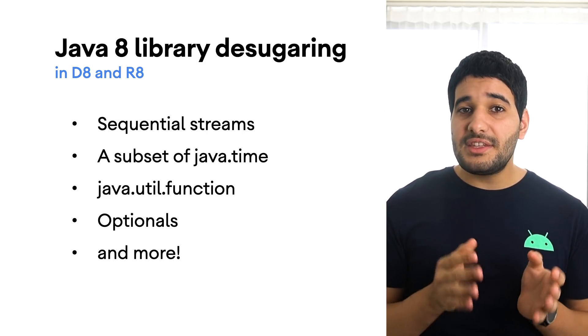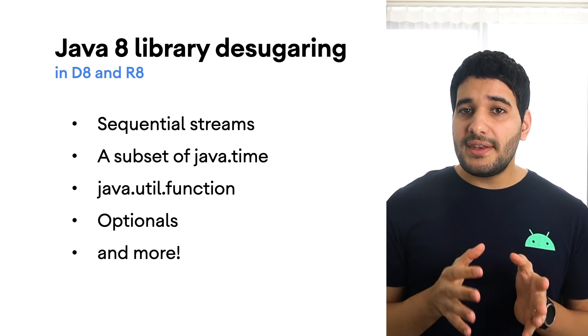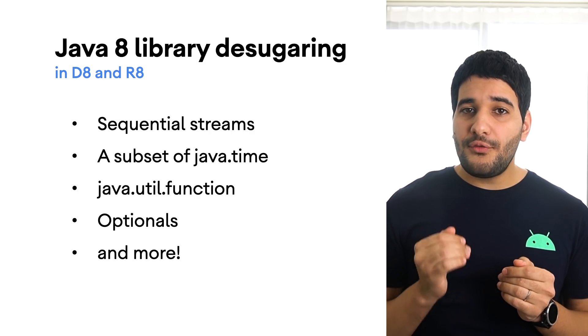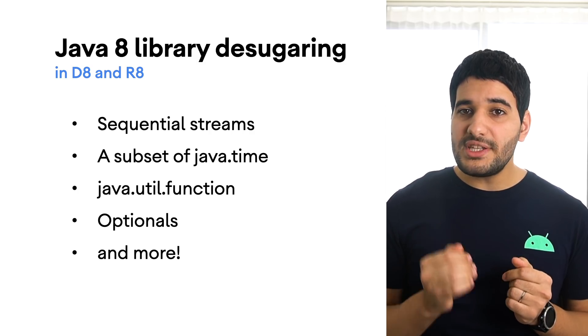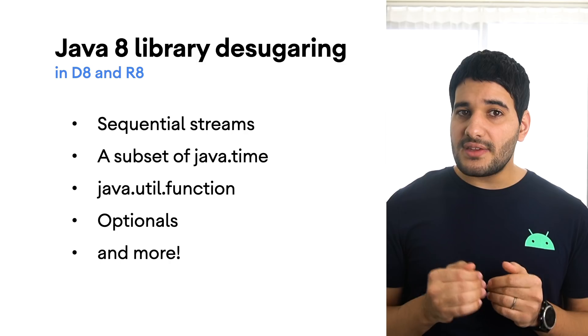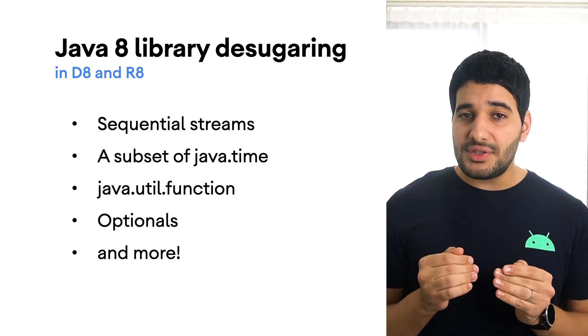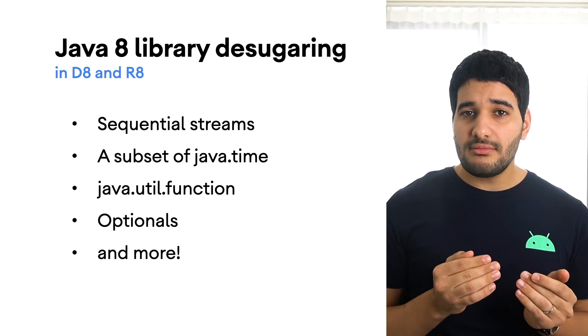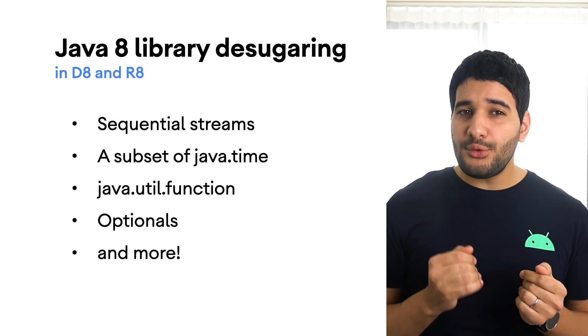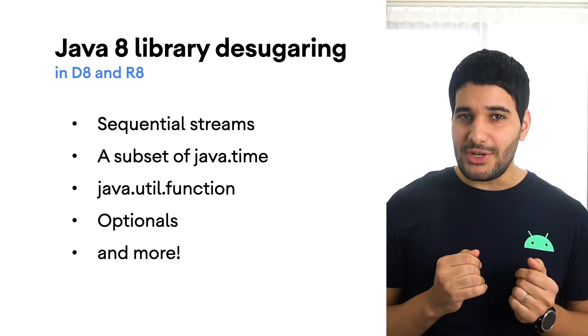This means you can now include standard language APIs that were available only in recent Android releases, such as java.util.streams, in apps that support older versions of Android.